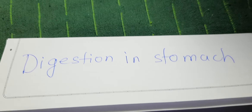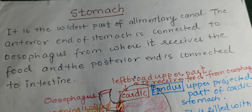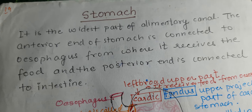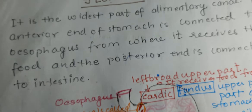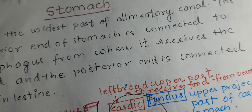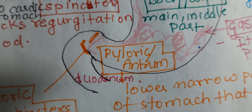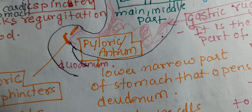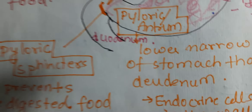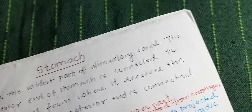Today we will discuss digestion in the stomach. First, we need to understand what the stomach is. It is the widest part of the alimentary canal. The anterior end of the stomach is connected to the esophagus, and the posterior end is connected to the intestine — specifically to the duodenum, which is the upper part of the small intestine.